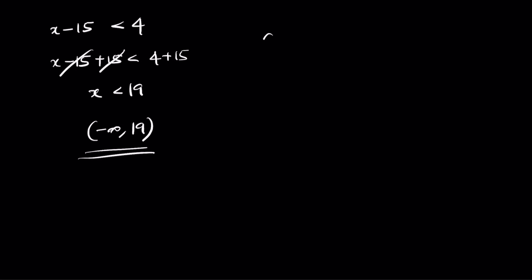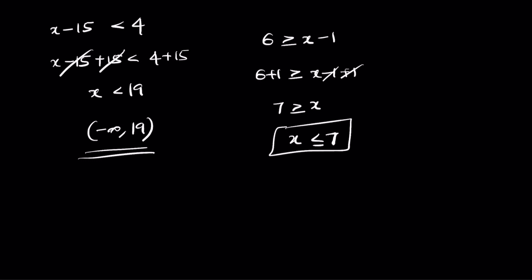Let's try another: 6 greater than or equal to x minus 1. Add 1 on both sides: 6 plus 1 greater than or equal to x minus 1 plus 1. So 7 greater than or equal to x, which flipped becomes x less than or equal to 7. Remember, when you flip it, the sign changes direction. In interval notation, this is negative infinity comma 7 closed interval.